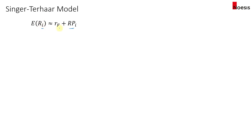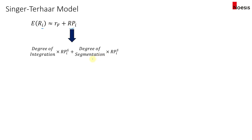If you want to estimate the return of asset class I, it's approximately equal to the risk-free rate plus the risk premium. Under the Singer-Terhaar model, we assume there are two different markets: one where the asset class is perfectly integrated with the global investable market (GIM), and the other where the asset class is perfectly segmented. Based on the degree of integration and the degree of segmentation, we calculate the weighted average of the risk premium under each market.